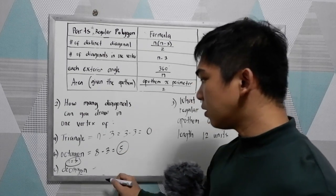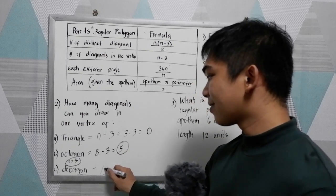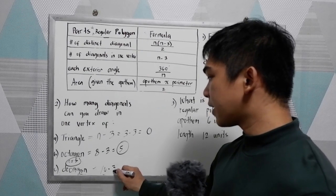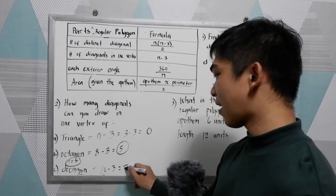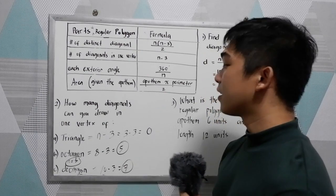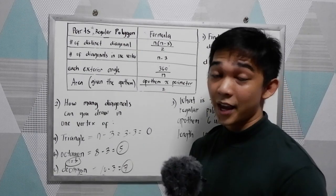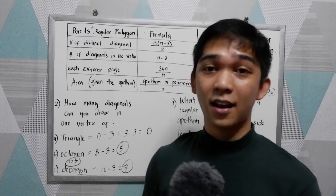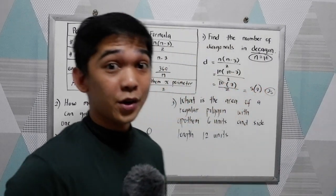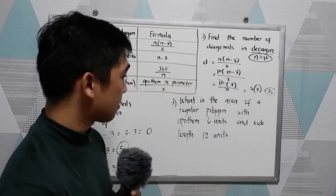For a decagon: 10-3 = 7. So you can draw 7 diagonals from one vertex of a decagon.